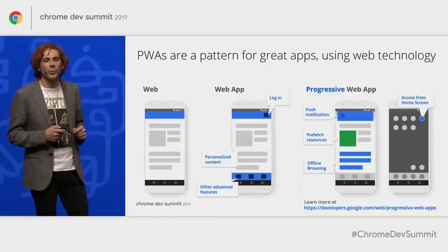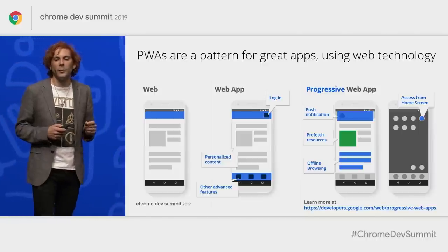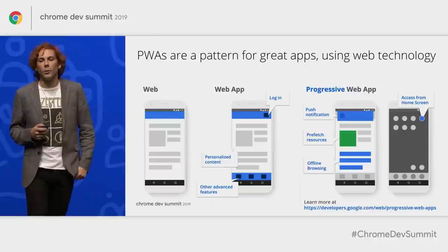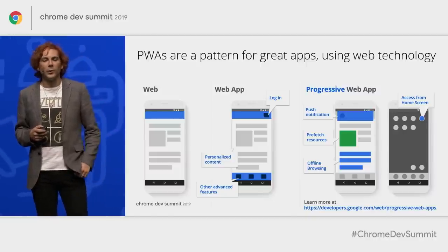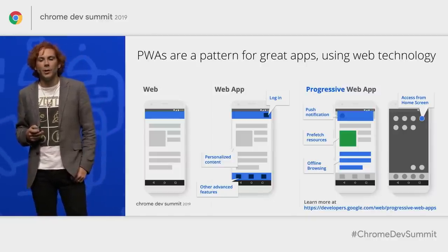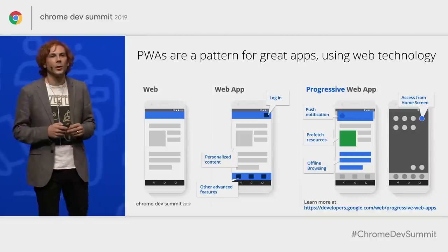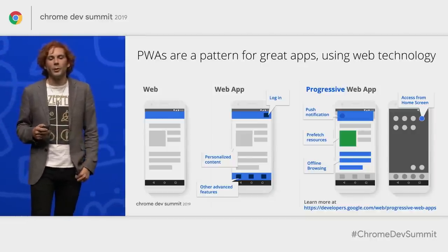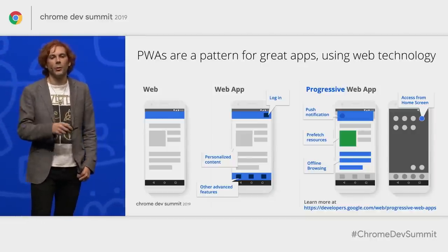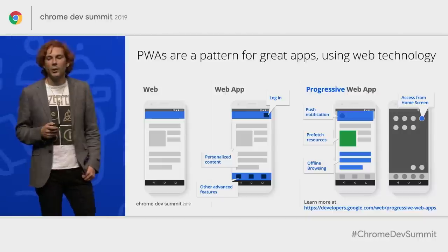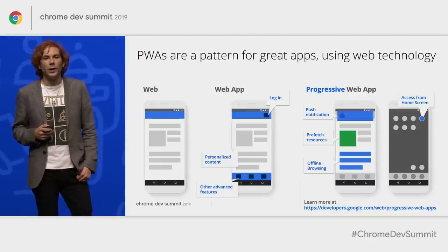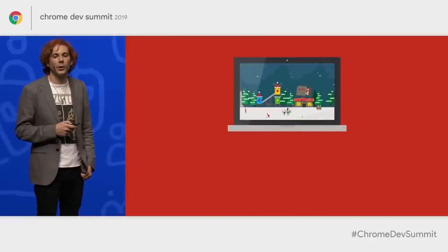There are other projects trying to crack this problem — React Native, Electron, Cordova — all offering ways to build native apps using web technology. But those experiences depend on functionality that won't also work in the web browser. The PWA's goal is to build directly on the web, so you can maintain one code base that works for both browser visitors and installed users.